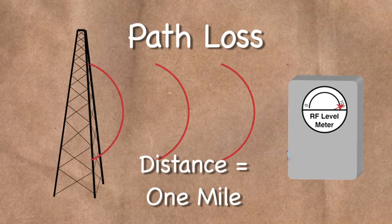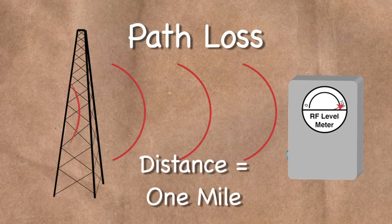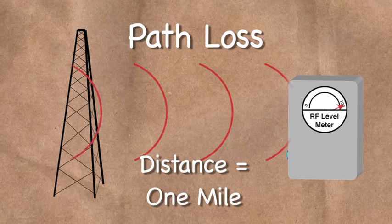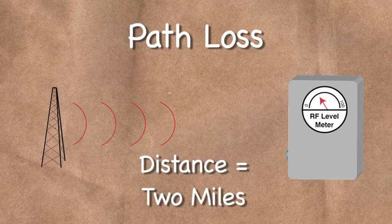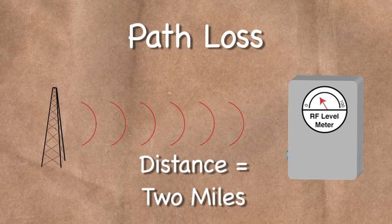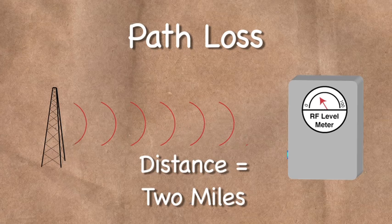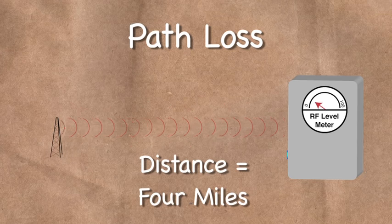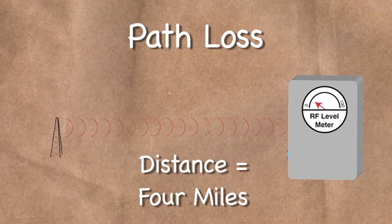Another important factor in the propagation of radio waves is path loss. As a signal moves further from its source, the intensity, or signal strength, is reduced. In fact, for every doubling of distance traveled, the signal strength is reduced to one quarter. In general, lower frequencies travel further than high frequencies.